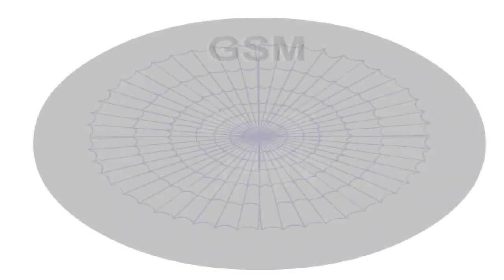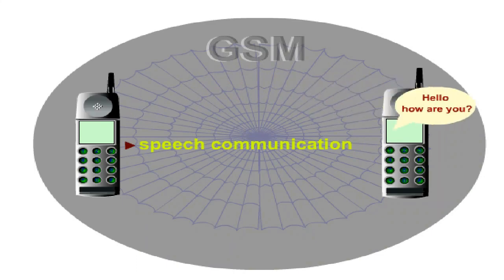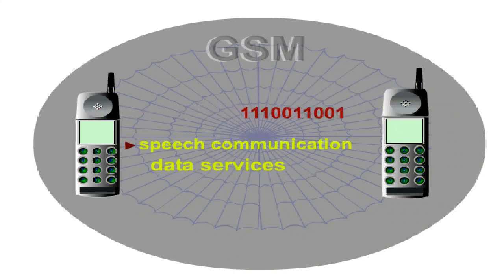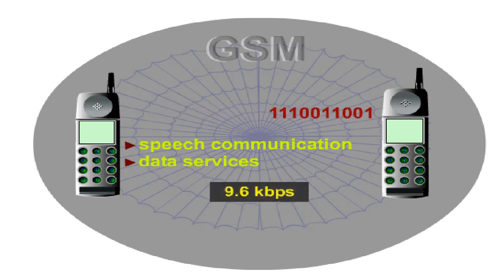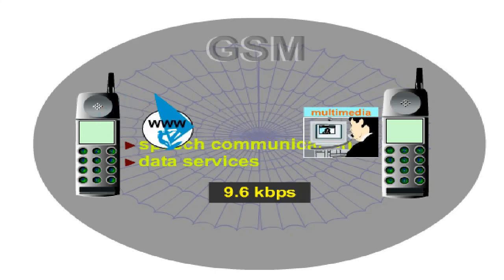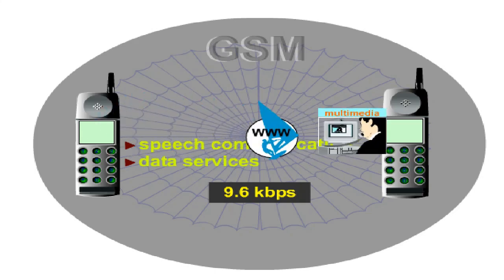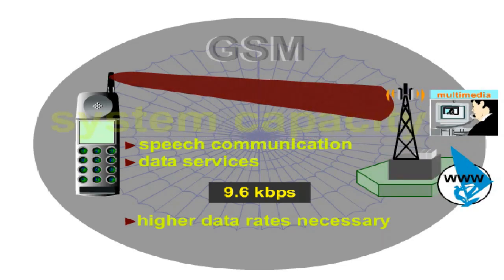GSM has been designed, above all, for speech communication. Although the standard also offers data services, their possibilities are limited by a data rate of 9.6 kilobits per second. To meet the growing demands of increasingly complex data applications, for example in the multimedia or internet sector, higher data rates are necessary. Therefore, the system's capacity is constantly being enhanced.